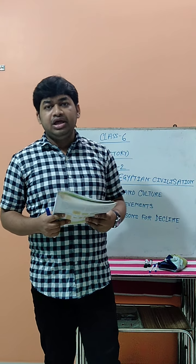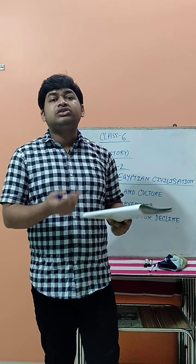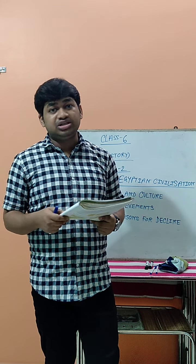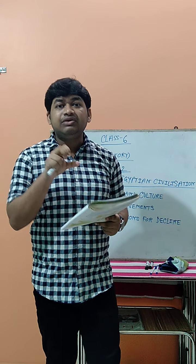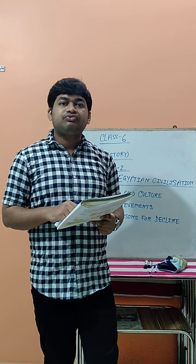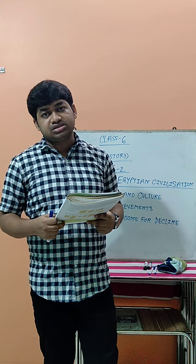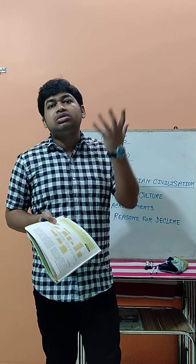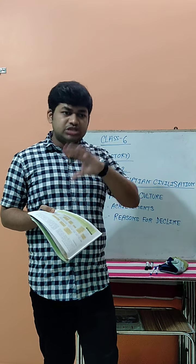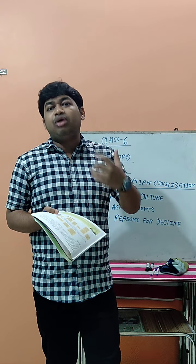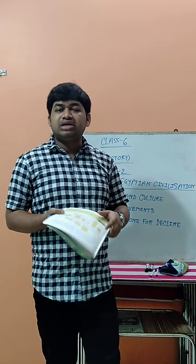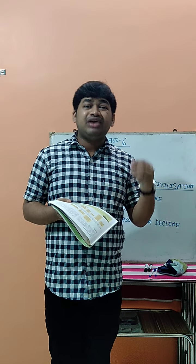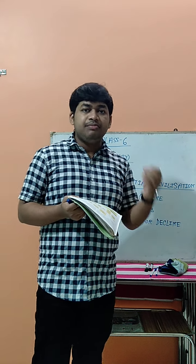The fourth achievement is medicine. Before the Egyptians, people did not know about medicine and could not cure diseases. But the Egyptian people were the first to use different types of medicines and invented medicine for different diseases. The fifth achievement is astronomy. Astronomy is the subject through which people study and predict about the future based on the stars. Those who study this subject are known as astronomers, and the Egyptians were very advanced in this field.